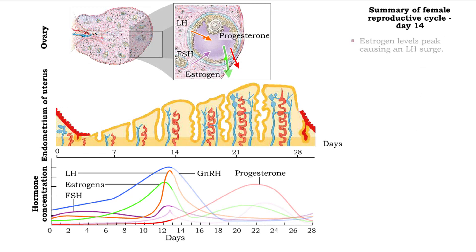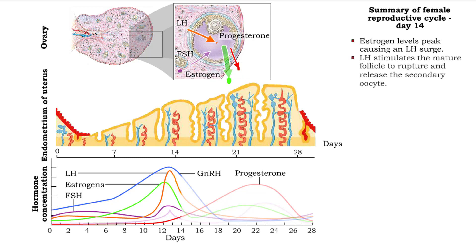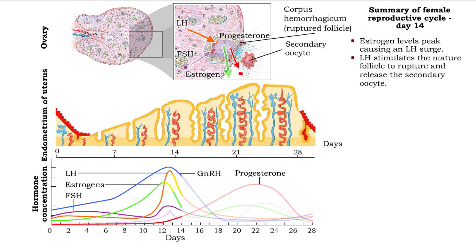On day 14, ovulation occurs as a result of a surge of luteinizing hormone signaling the mature ovarian follicle to rupture and release a secondary oocyte.